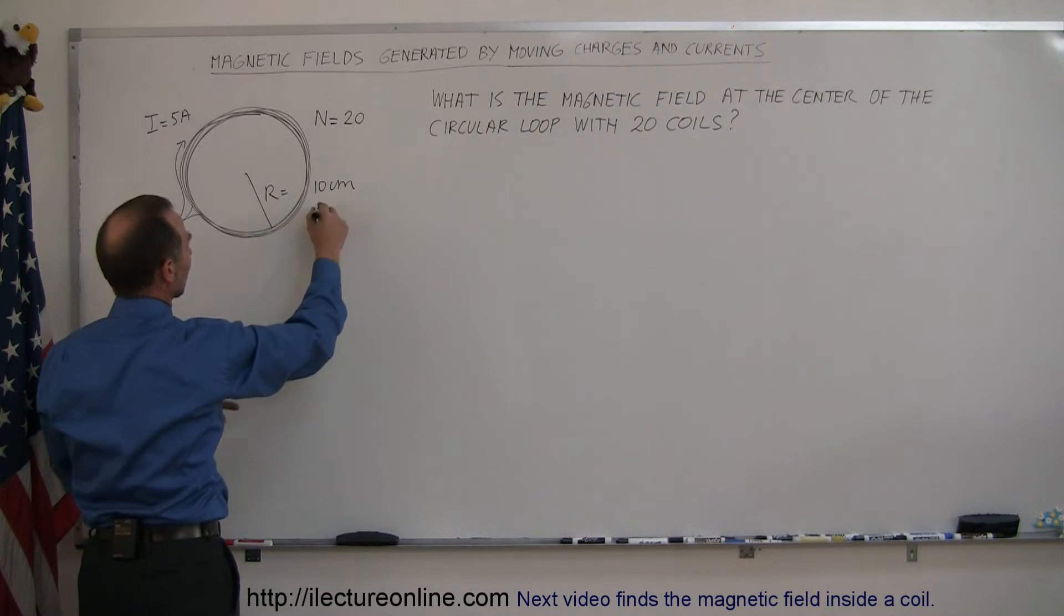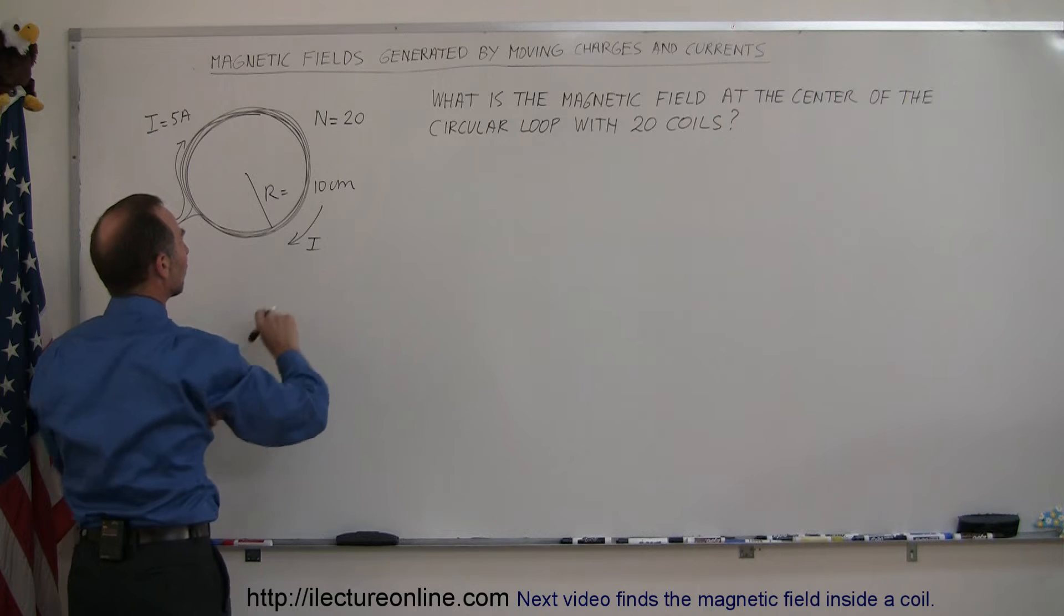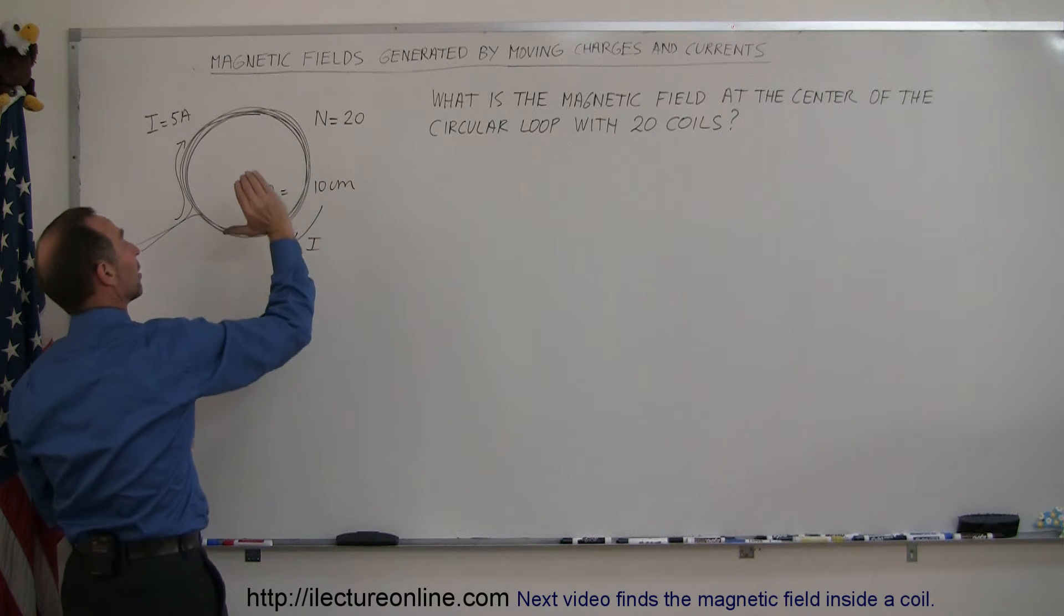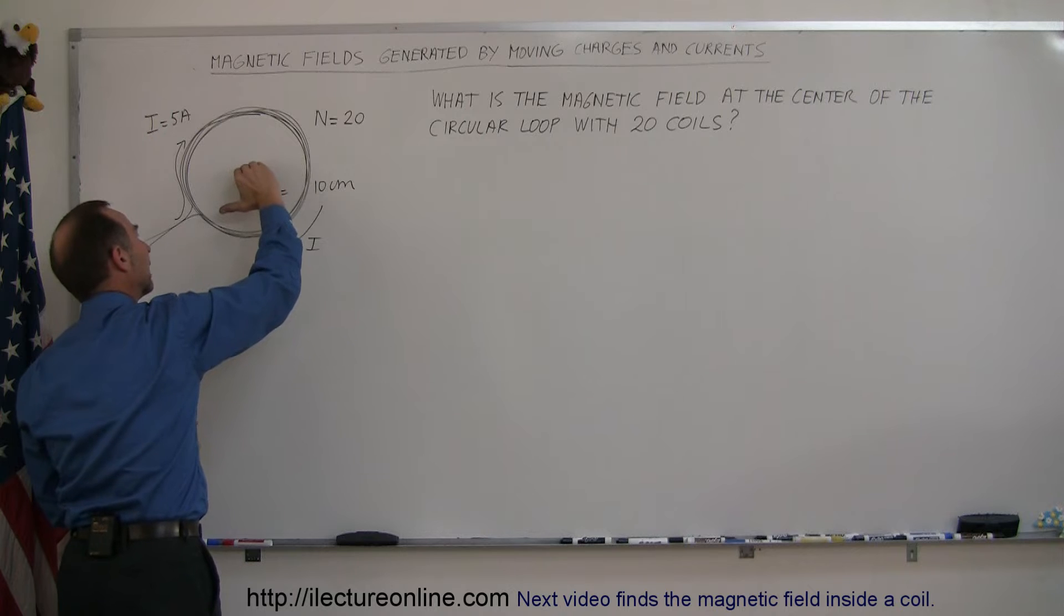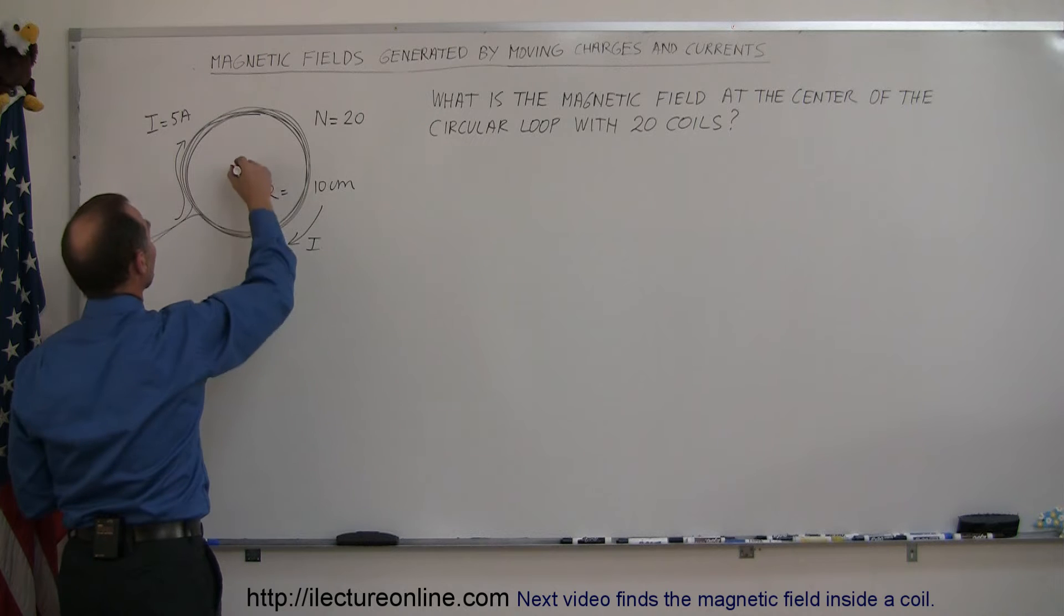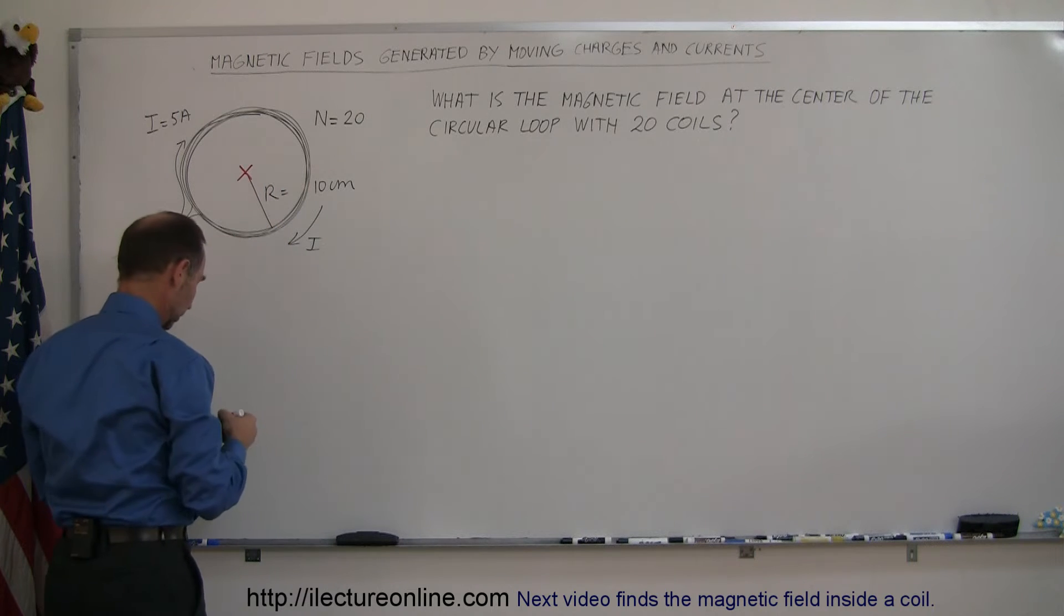If you look at this part right here where the current is in this direction, you can see again take your thumb, put it in the direction of the current and the magnetic field will go into the board inside the loop and out of the board outside the loop. So inside the loop the magnetic field is into the board.